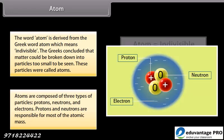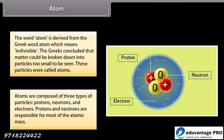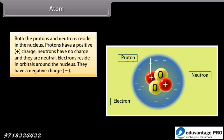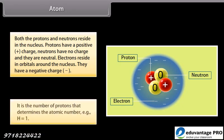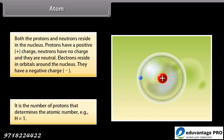Atoms are composed of three types of particles: protons, neutrons and electrons. Protons and neutrons are responsible for most of the atomic mass. Both the protons and neutrons reside in the nucleus. Protons have a positive charge. Neutrons have no charge and they are neutral. Electrons reside in orbitals around the nucleus. They have a negative charge. It is the number of protons that determines the atomic number. That is, H is equal to 1.